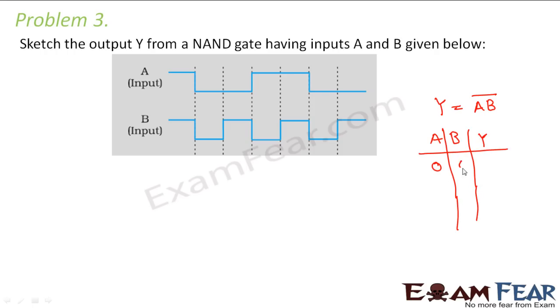For a NAND gate 0, 0, 0, 1, 1, 0, 1, 1. So what do you get? This will be 1, this will again be 1, this will be 1, this will be 0. Now using this we will plot the output.